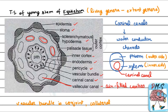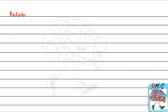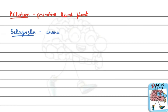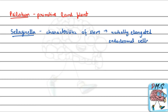Now for the other options: Silotum is a primitive land plant, but it does not match Calamites. Selaginella does not have carinal canals; instead, its stem has radially elongated endodermal cells called trabeculate. These trabecular layers are air-filled, so it doesn't match either.